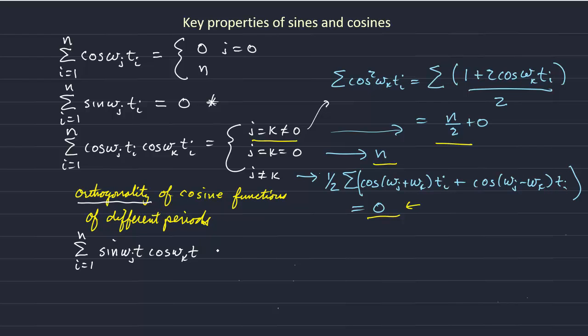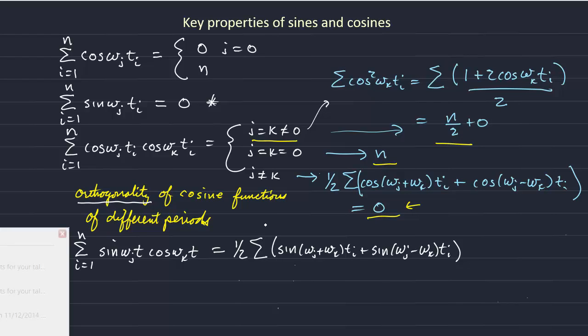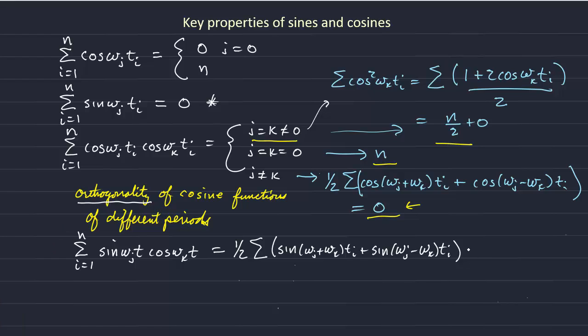We can describe that using a trig identity, which turns out to be sine omega j plus omega k t i plus sine omega j minus omega k t i. This turns into a sum of two sine functions, where if we sum it over the whole record, we get 0.